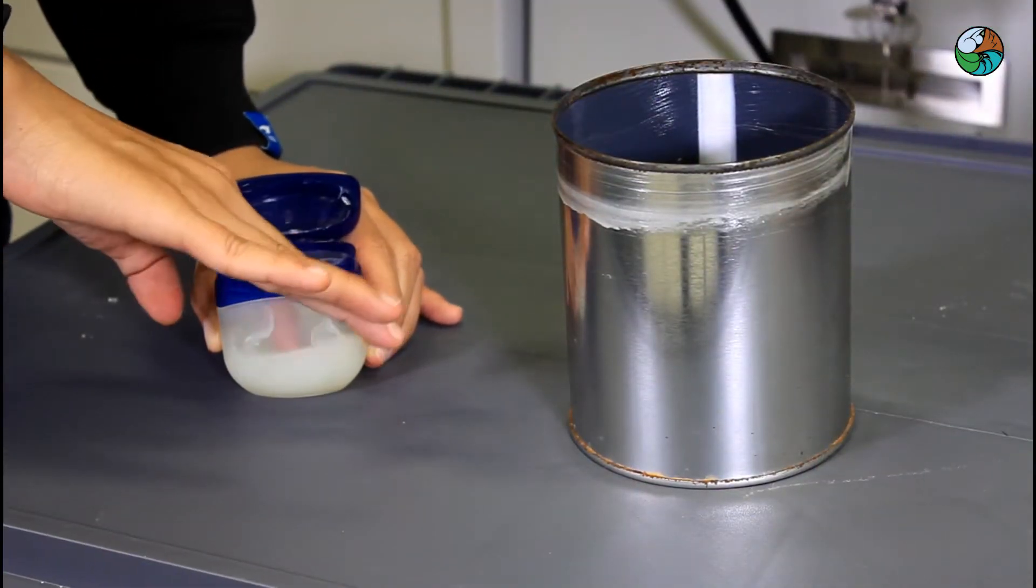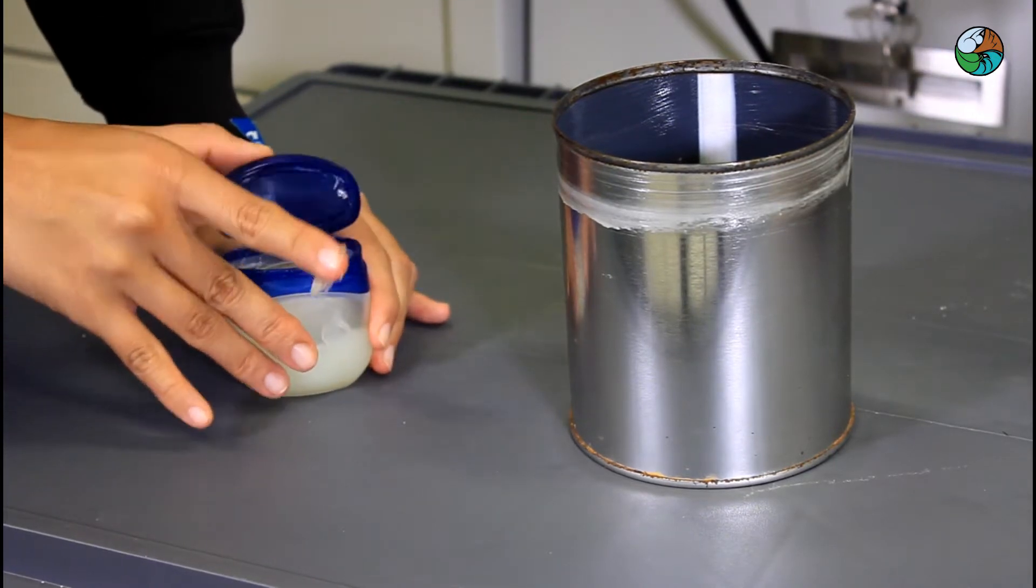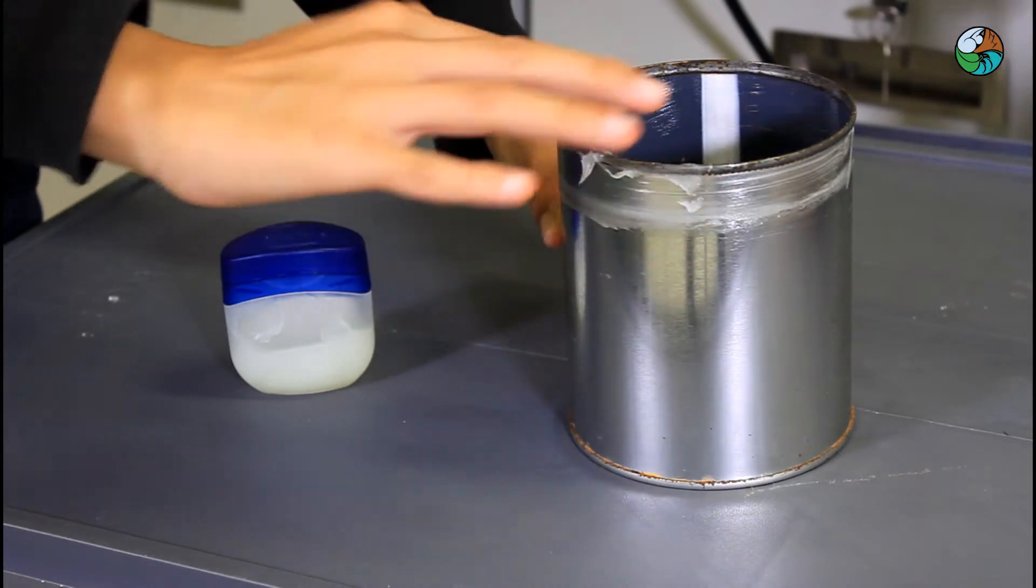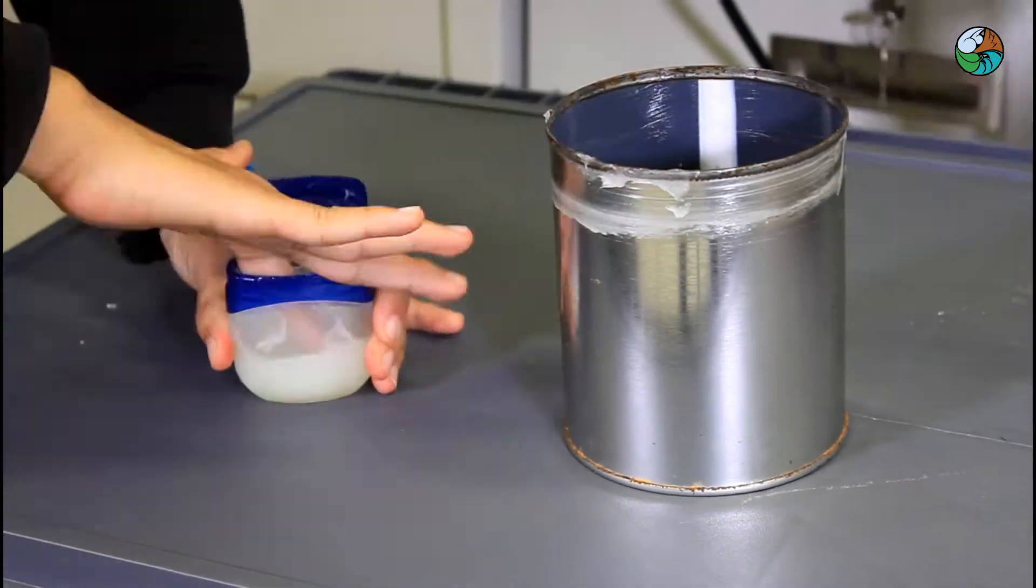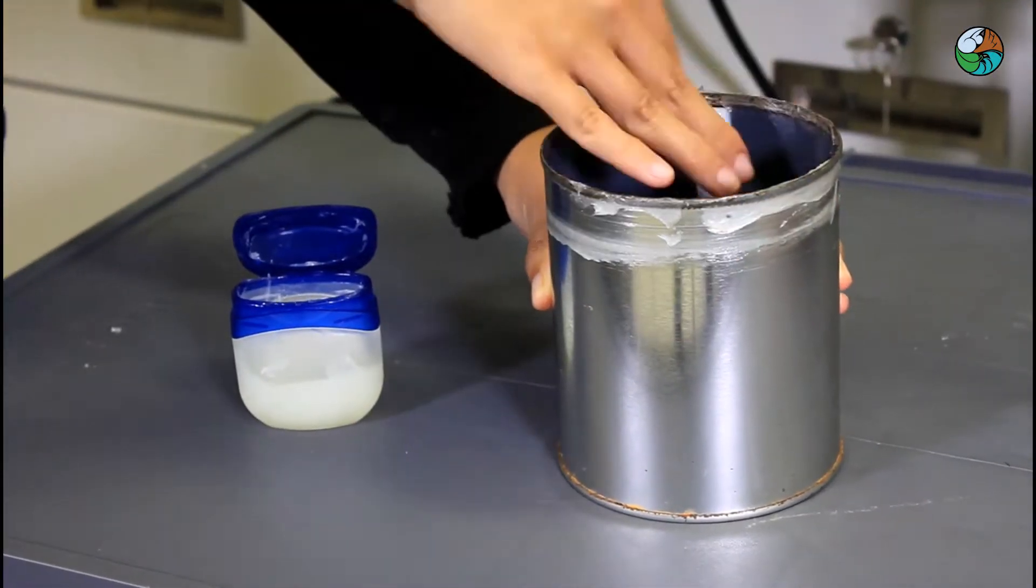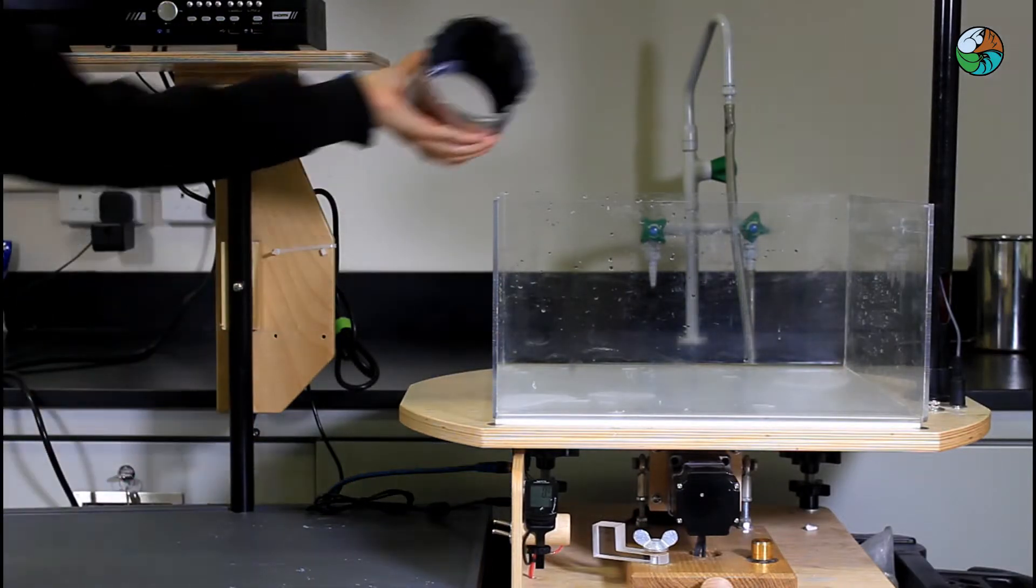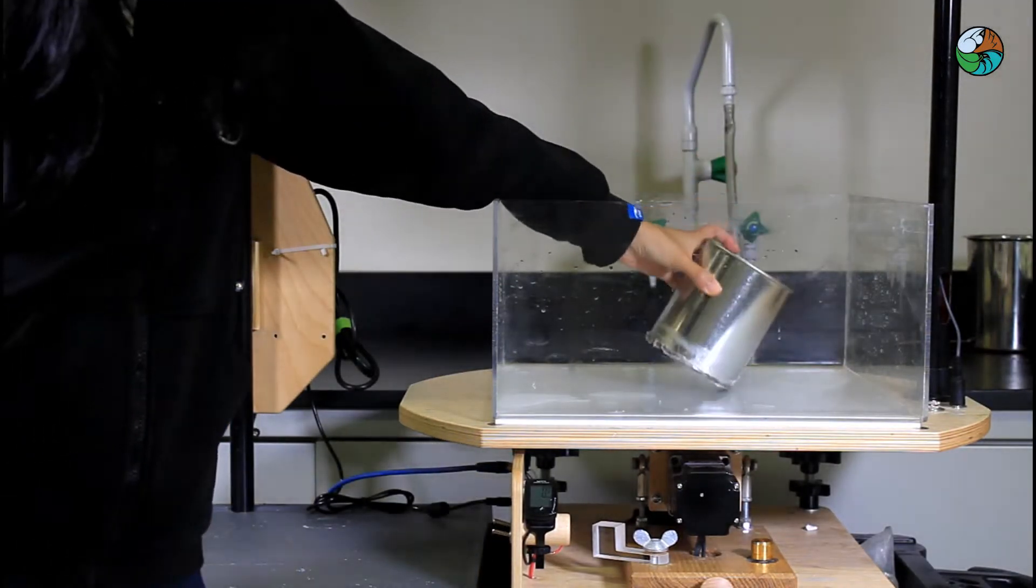First, prepare a can which opens at both sides. Rub Vaseline along the rim of its side to avoid leakage later in the experiment. The side with Vaseline faces down. Place the can at the center of the water tank.